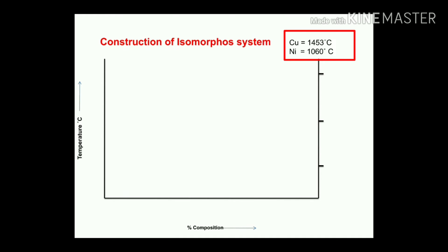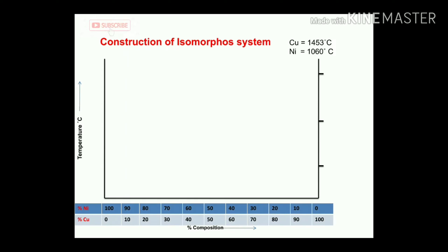Copper has a melting point of 1453°C and nickel has a melting point of 1060°C. The x-axis shows weight percentage of compositions, going from 100% nickel to 0% nickel and 0% copper to 100% copper. The y-axis is scaled according to the highest melting point of the alloys — 1453°C.